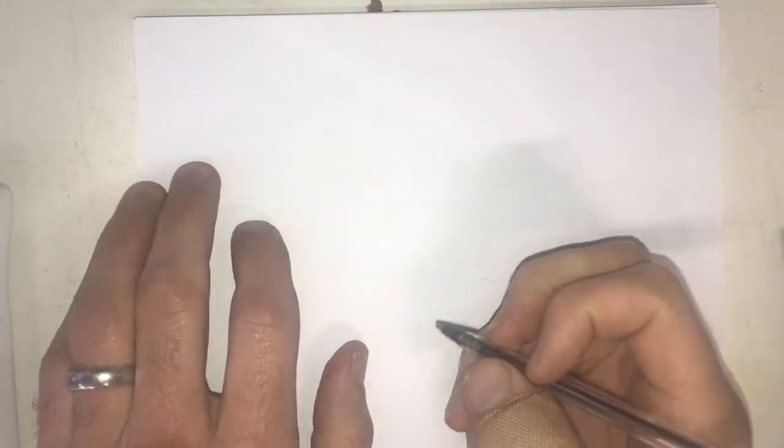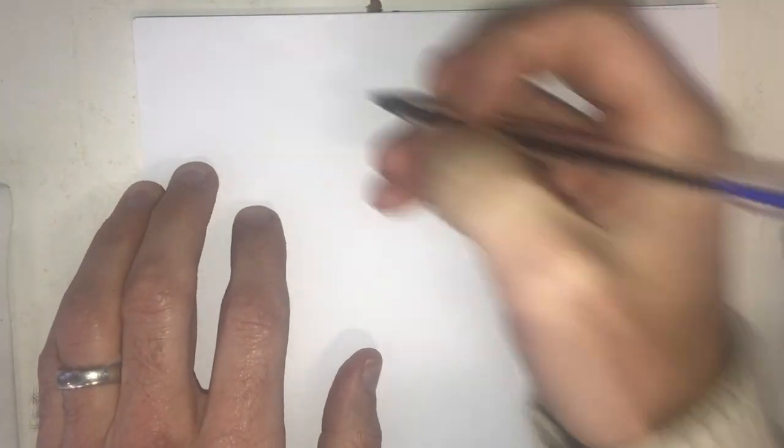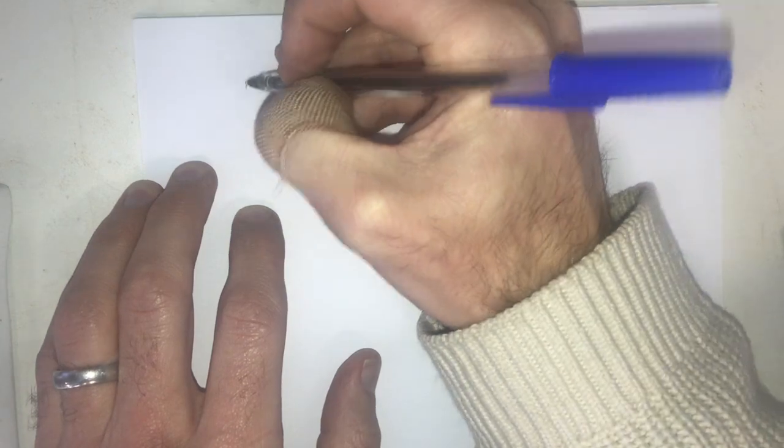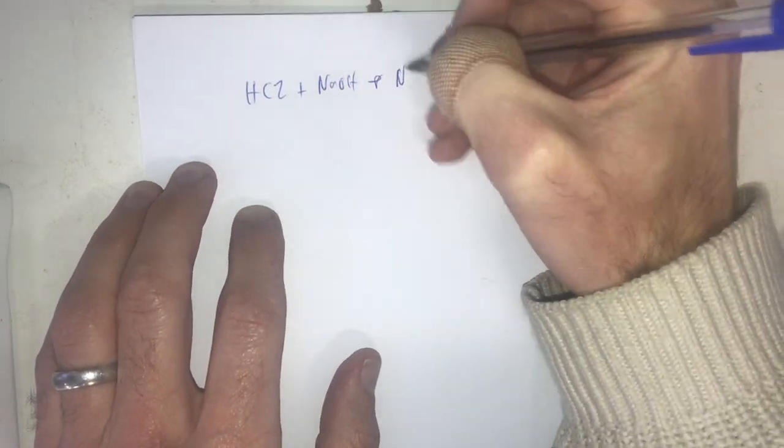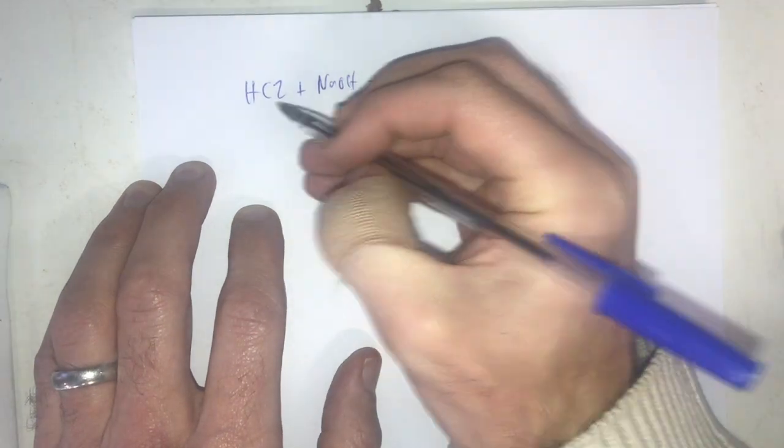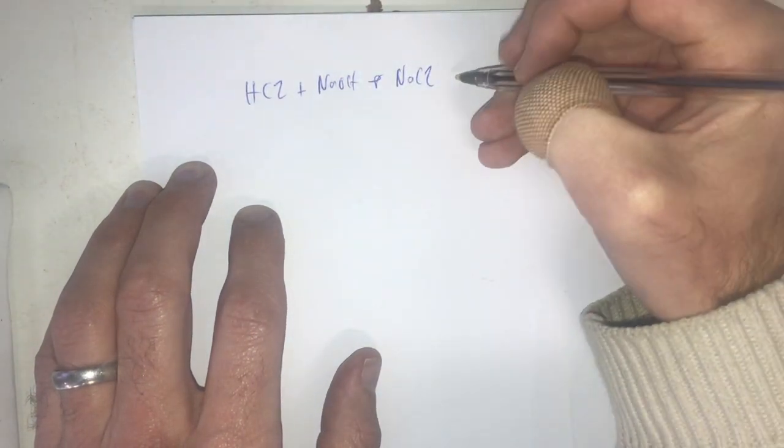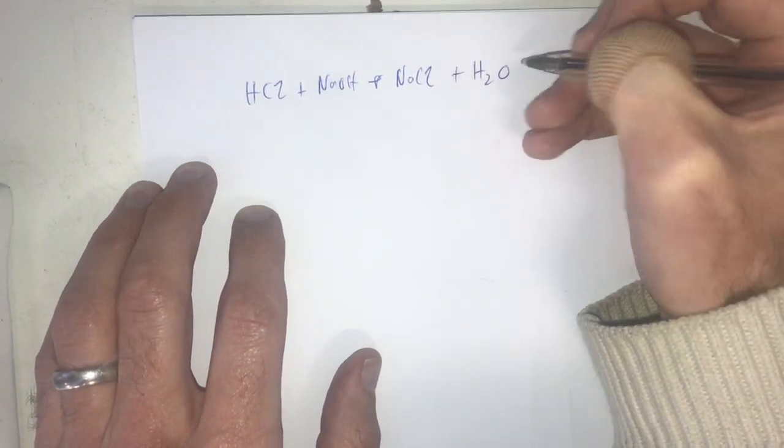First question in this worksheet is about neutralizing a solution of hydrochloric acid. So first of all we need to understand what the equation is which is HCl plus NaOH and that is going to form NaCl and it's a hydroxide and an acid so therefore it's going to be adding together water.